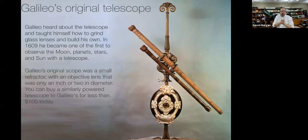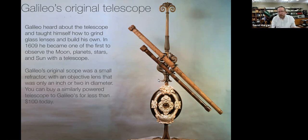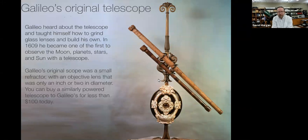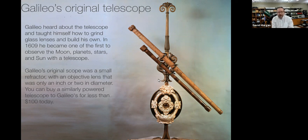Galileo was one of the first people to take a telescope and point it at the sky. He didn't invent the telescope exactly, but he was one of the first to make careful observations of the moon and planets. He read a book about how telescopes were made — telescopes at the time were used by sailors to sight land and look for other ships. He read about how to make lenses and made his own in 1609. He observed sunspots on the sun, craters on the moon, moons of Jupiter, and all the stuff we talked about in the first week of class. Galileo's telescope was a refractor, using lenses to make an image, and you can buy a telescope as good as Galileo's for a hundred bucks today on Amazon.